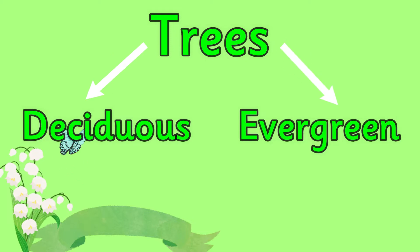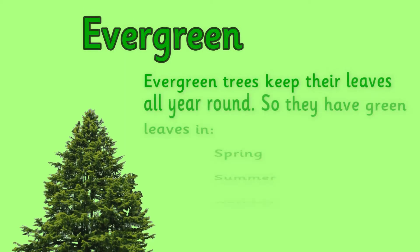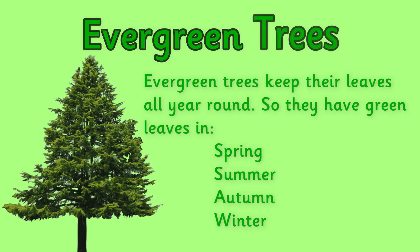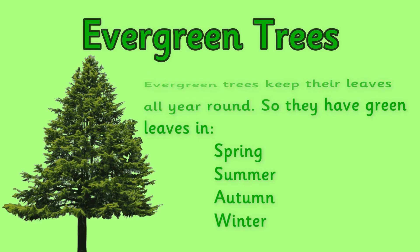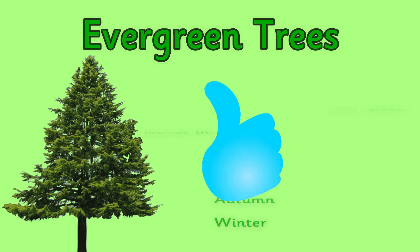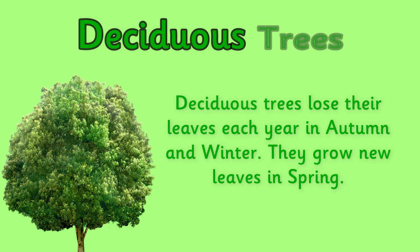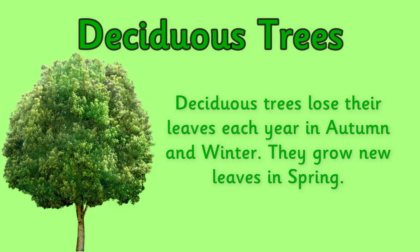Did you know that there are two types of trees: deciduous and evergreen? In this video we are going to talk about the differences between them. Evergreen trees keep their leaves all year round, so they have green leaves in spring, summer, autumn and winter. An easy way to remember this is with the name 'evergreen', meaning green all year. Deciduous trees lose their leaves each year in autumn and winter, and they grow new leaves in the spring.